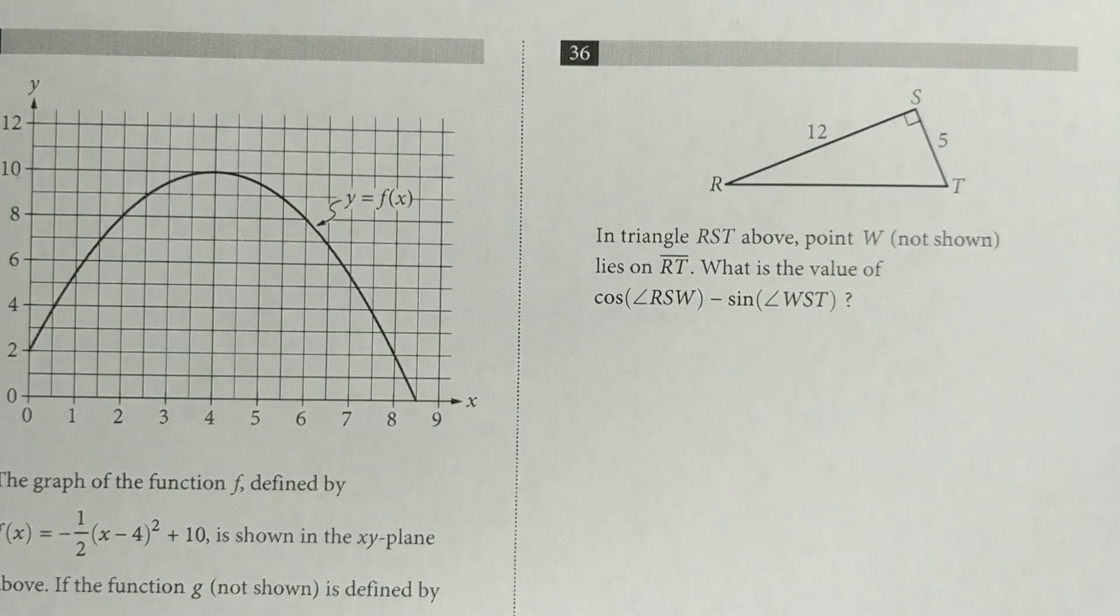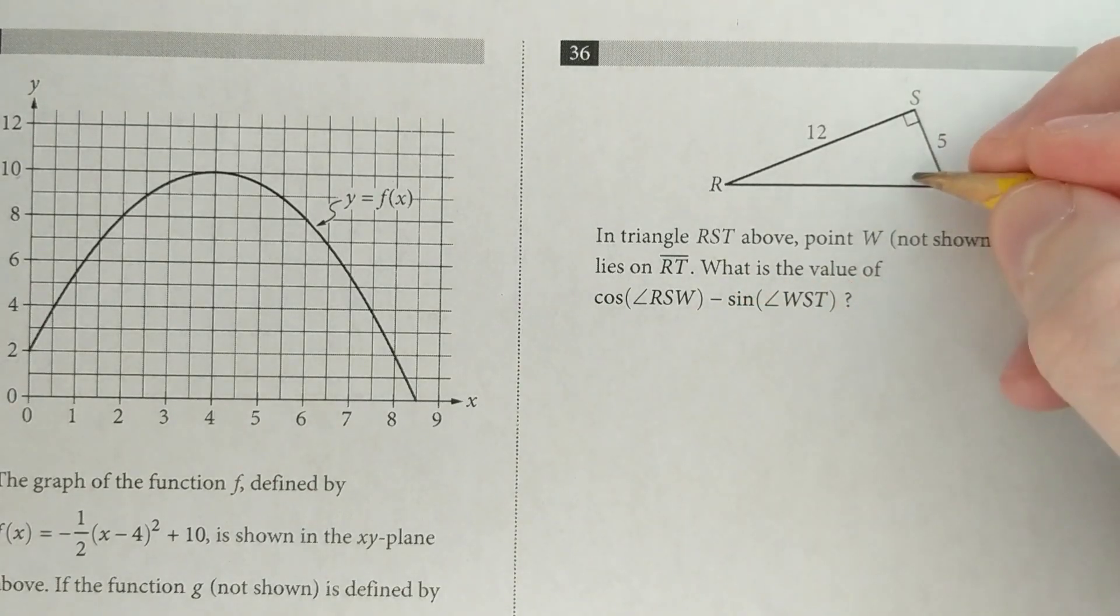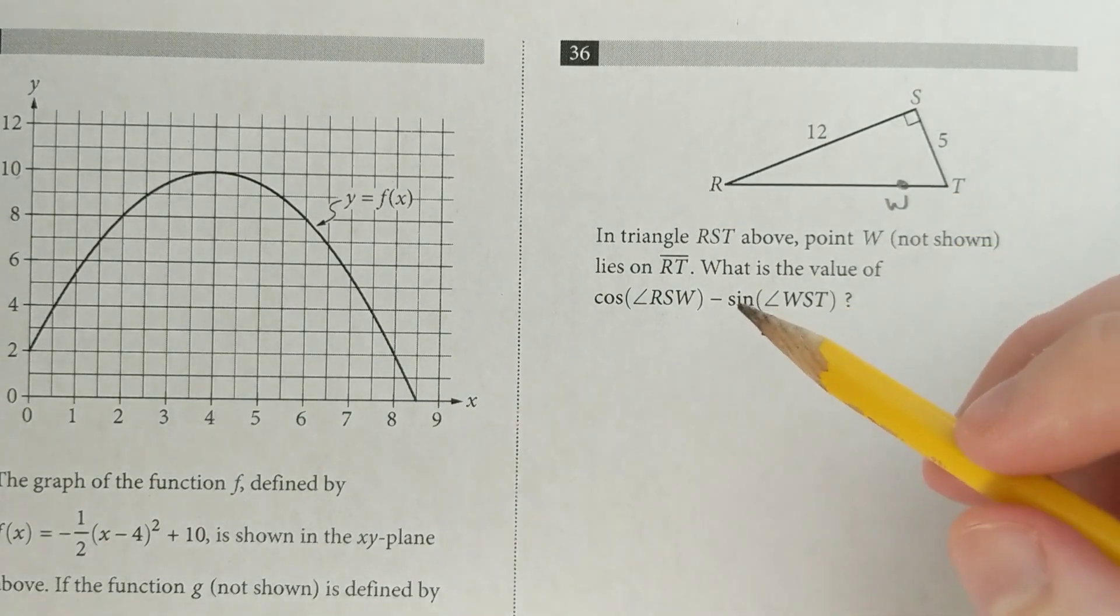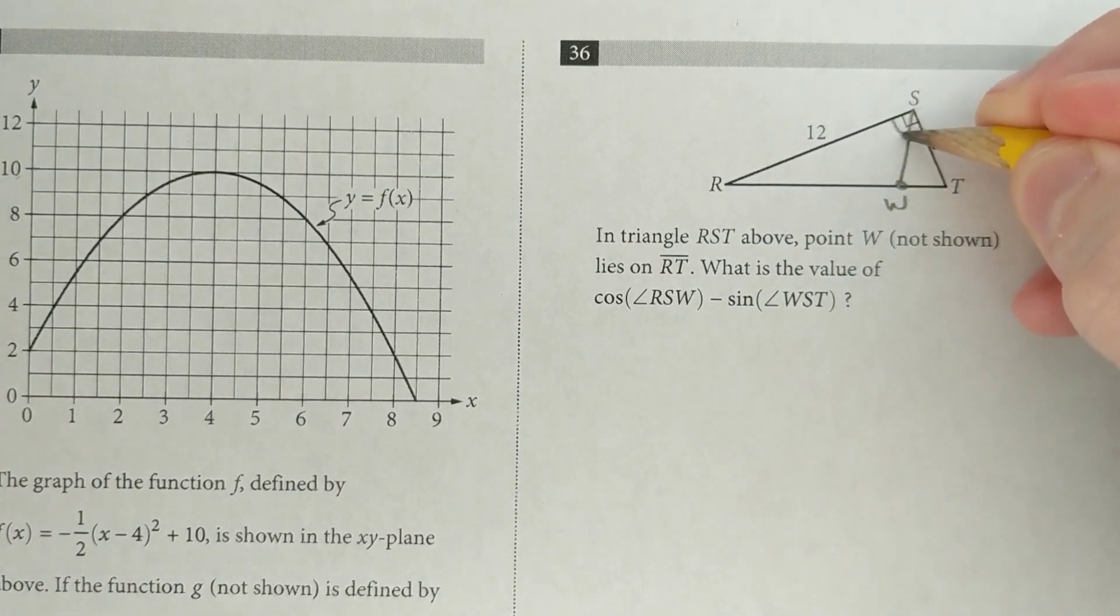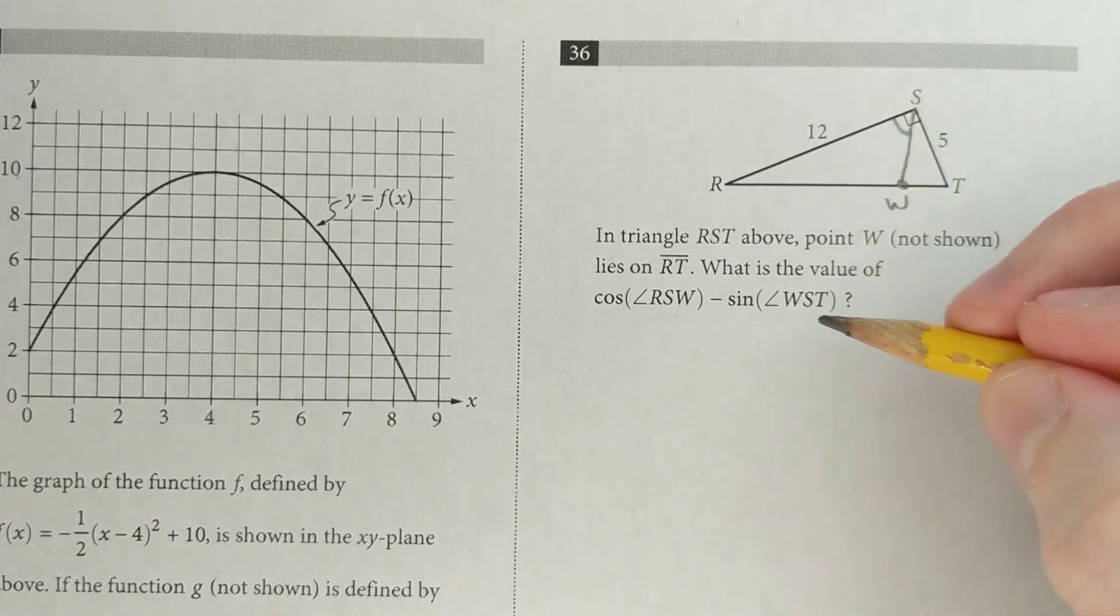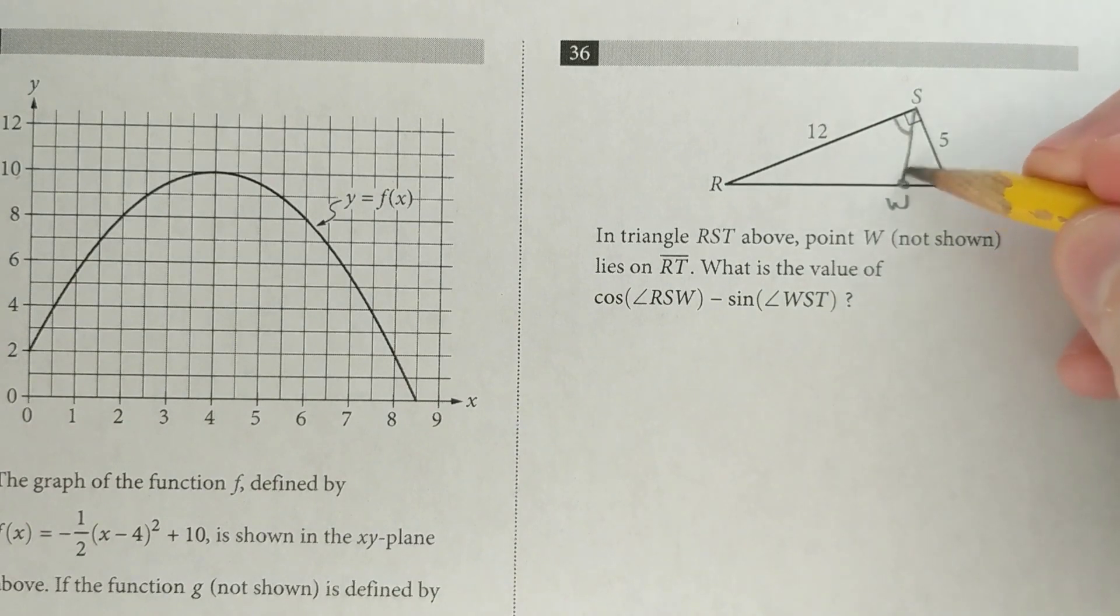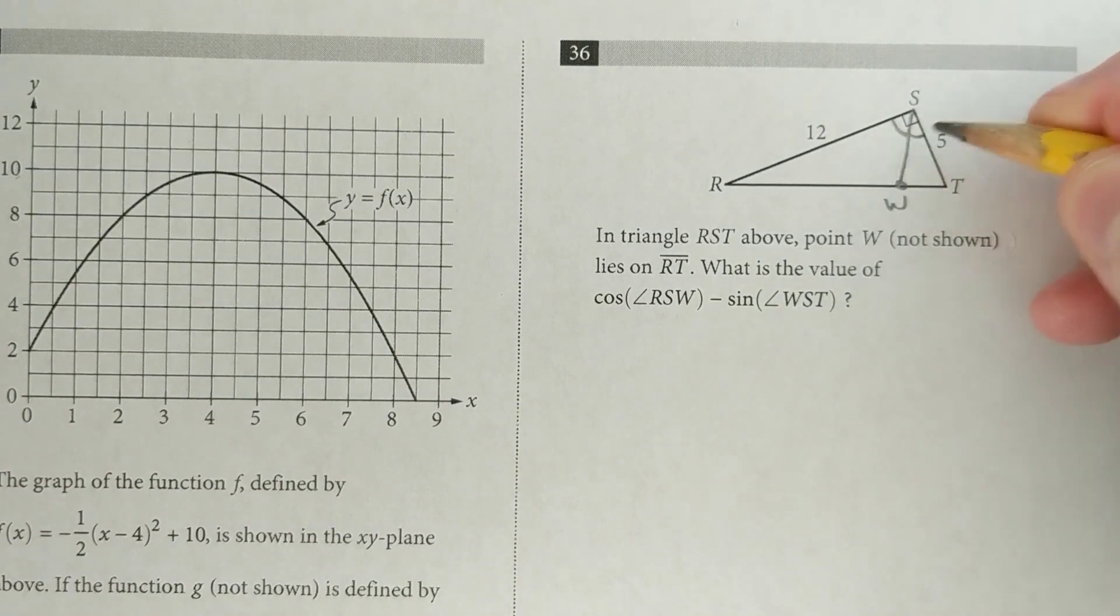Here's another variation of this concept. So it says point w not shown lies on rt. Okay, we can put it anywhere, I'll just put it right there. What is the value of the cosine of rsw, so this angle, minus the sine of wst, so this angle?